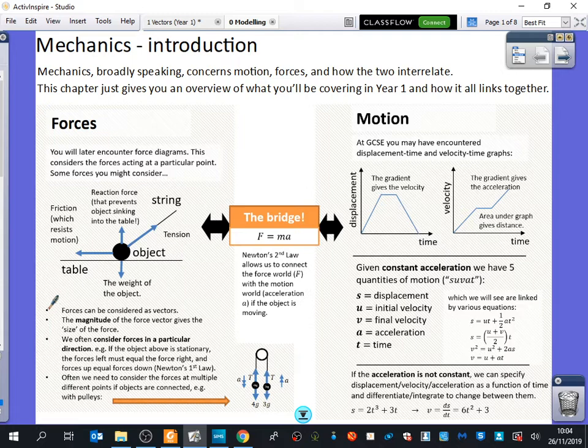And it says here, this is where vectors is such an important thing. Forces can be considered as vectors, because they have directions. The magnitude of the force vector gives us the size of the force. So now you can see why it makes sense that we've found magnitudes of vectors in pure maths, because we're going to be using it a lot in mechanics. And we often consider the forces in particular directions. So if the object above is stationary, then forces left would be equal to forces right, and forces up would be equal forces down. And that's what we call Newton's first law, that the forces would be equal to each other if it was stationary and not moving.